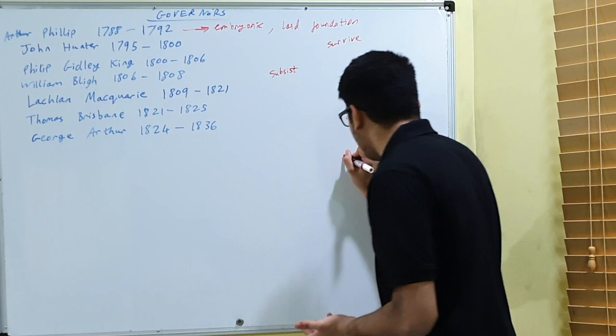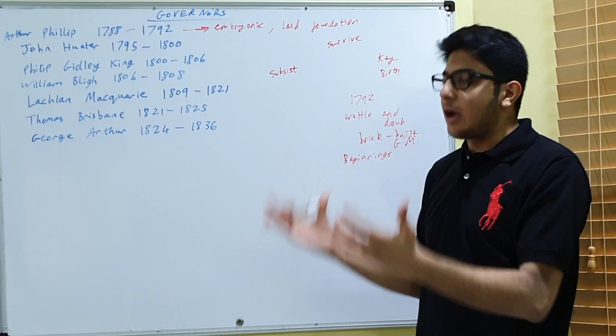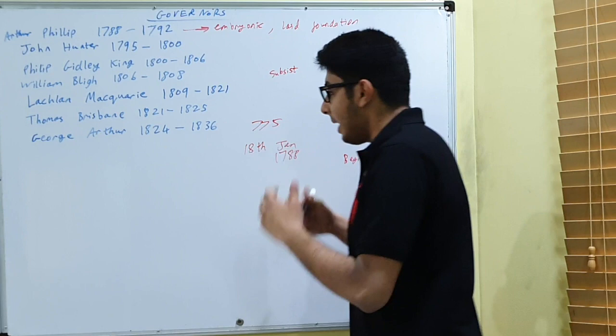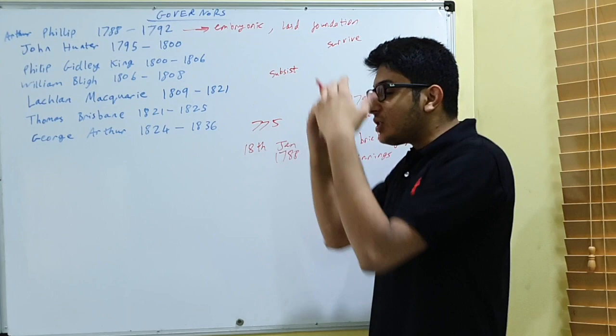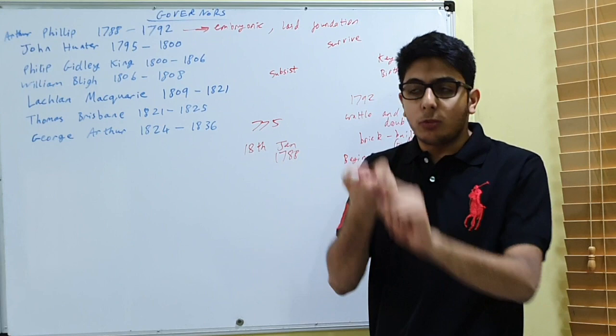Now in terms of how he dealt with the convicts—because remember he came to Australia on a ship filled with convicts. I believe there were 775 convicts on that ship when he arrived in Botany Bay on the 18th of January 1788. These were prisoners who were sent from London all the way to Australia because the British government did not want to deal with them.